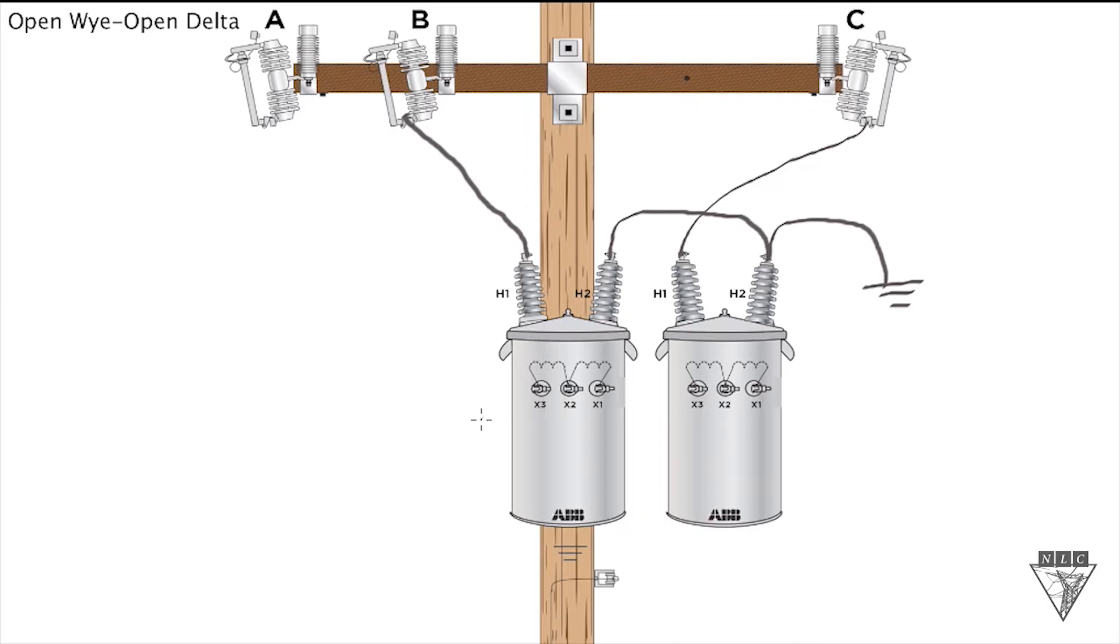Okay, let's move on to the secondary connection. On the secondary side, we're only going to utilize one X2 bushing as our neutral. We're going to take it to ground on the center transformer. Label it as our neutral. So there's our neutral.